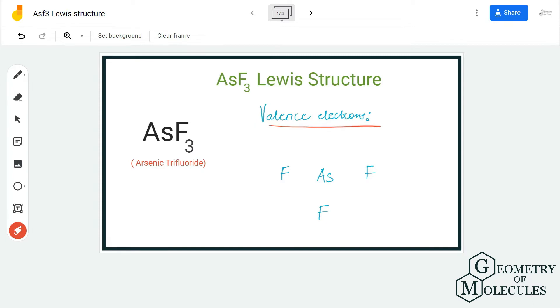Here we have one atom of arsenic which has five valence electrons in its outer shell, and three atoms of fluorine. Each fluorine atom has seven valence electrons in its outer shell, so in total we have 26 valence electrons for AsF₃.